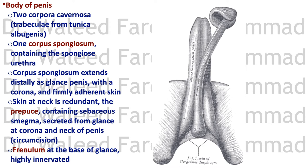The corpus spongiosum extends distally as the glans penis. The glans has a corona and is covered by a piece of skin called the prepuce, which contains smegma. This is the piece of skin that is removed in circumcision.